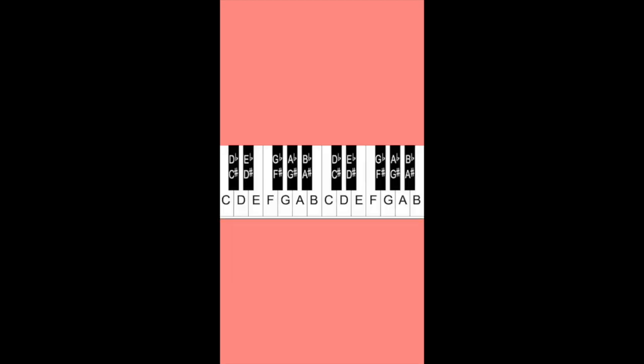This example starts on C, but that will vary depending on the size of the piano. An 88 key piano will start on A, a 76 key piano will start on E, and a 61 key piano will start on C. We'll assume that the above example is a 61 key piano and that it would continue on past the B that you see there.